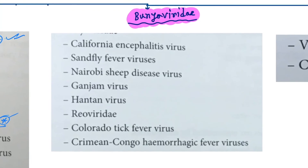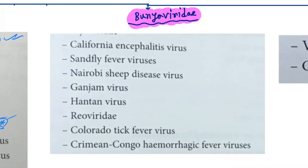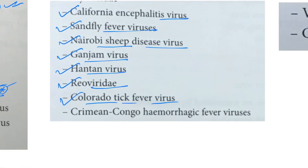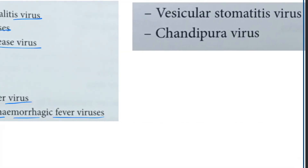Next is Bunyaviridae. The viruses are California encephalitis virus, sandfly fever virus, Nairobi sheep disease virus, Ganjam virus, Hantaan virus, and under Reoviridae: Crimean-Congo hemorrhagic fever virus and cholera hemorrhagic fever virus.